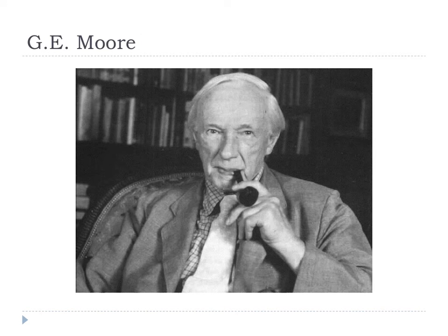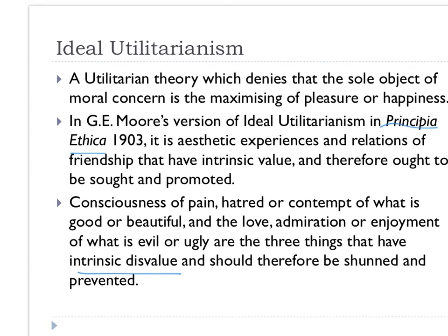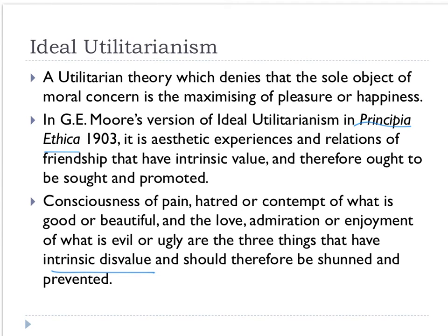G.E. Moore is the most philosopher-looking philosopher of all time. G.E. Moore contributes as an intuitionist utilitarian and proposed ideal utilitarianism in Principia Ethica, 1903 — a major piece of ethical work. He argues that certain ideas have intrinsic disvalue and should be shunned, such as admiration of evil or ugly things, which has intrinsic disvalue and should be shunned or prevented.